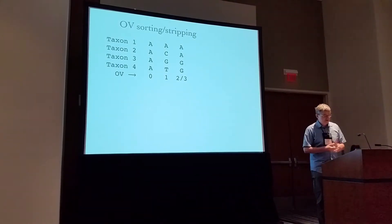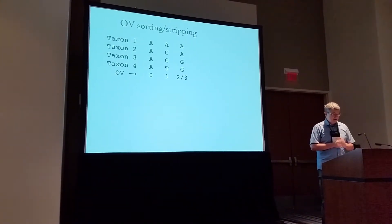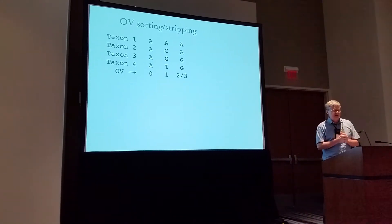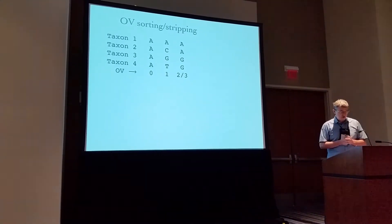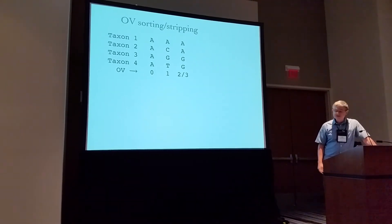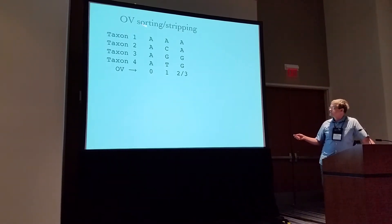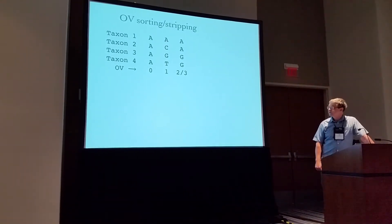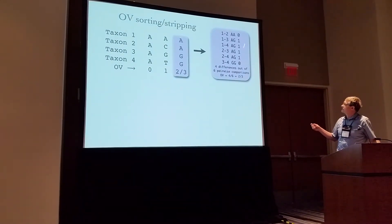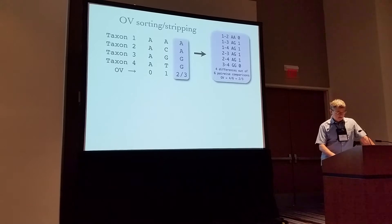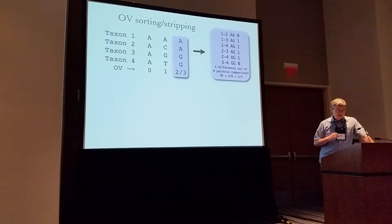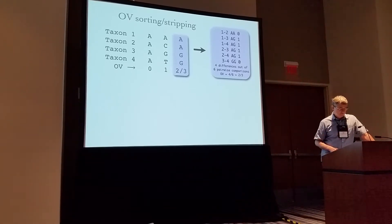I want to discuss OV sorting. Observed variability, or OV sorting, has been used in several recent studies to justify stripping some subset of sites from an alignment judged too noisy or saturated. OV is calculated for an individual site by computing the average over all possible pairwise comparisons of taxa. Constant sites yield OV equals zero, and a site where every possible pairwise comparison yields a difference gets OV of one, the maximum. An alleged benefit of OV is that trees and models are not used in its calculation, avoiding assumptions about tree topology, branch lengths, or model parameters.